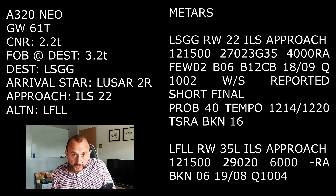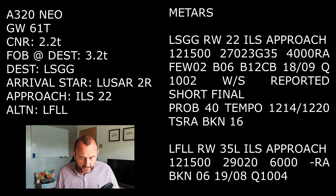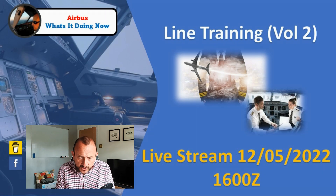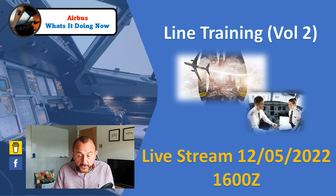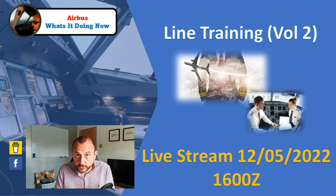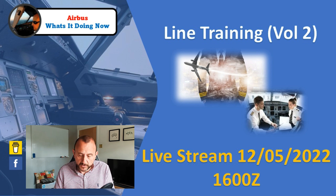For the Geneva arrival, you can expect the LUSAR Romeo with the ILS onto runway 22. The reason I've chosen this particular arrival and approach is it can be quite tricky. There's a bit of weather, there's potential wind shear, and there's certainly some terrain. The arrival itself has some complexities, and for those of you that know Geneva and know this arrival, it can have some timing and workload management issues, as they like to bring you in a little bit short sometimes.